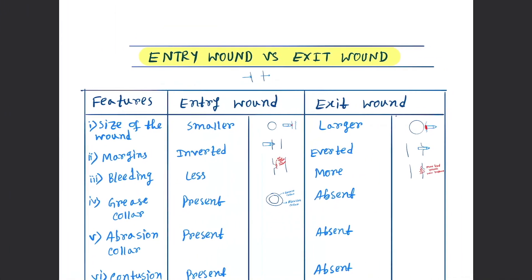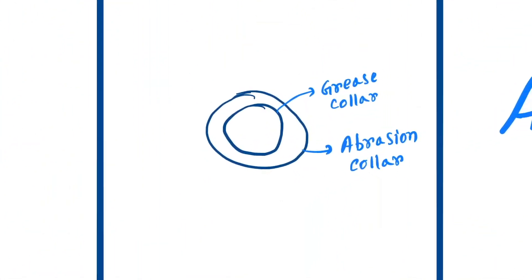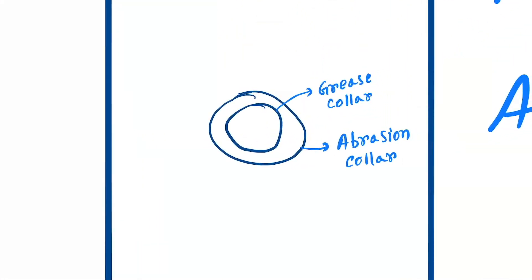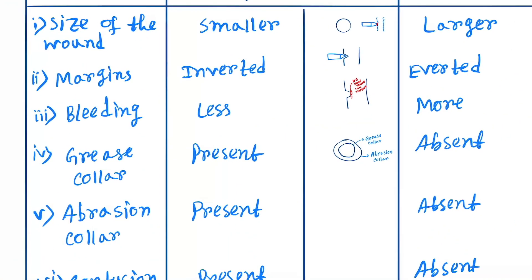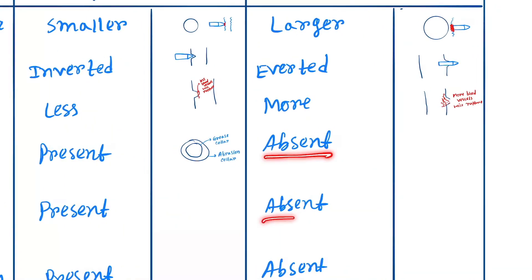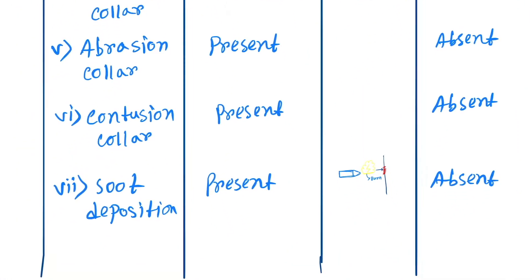Next is grease collar. The bullet will cause two types of collars: the grease collar from inside and the abrasion collar on the outside. In entry wound, both grease collar and abrasion collar are present. But in case of exit wound, both are absent.